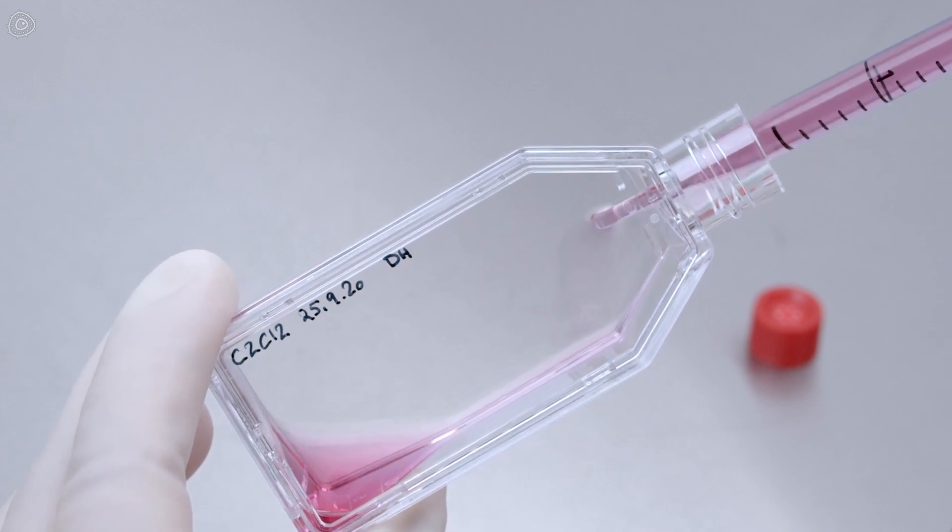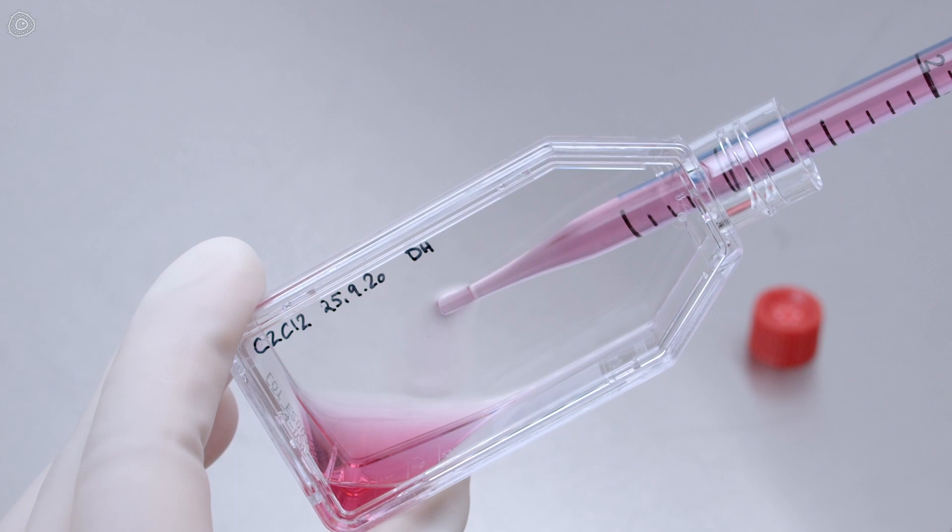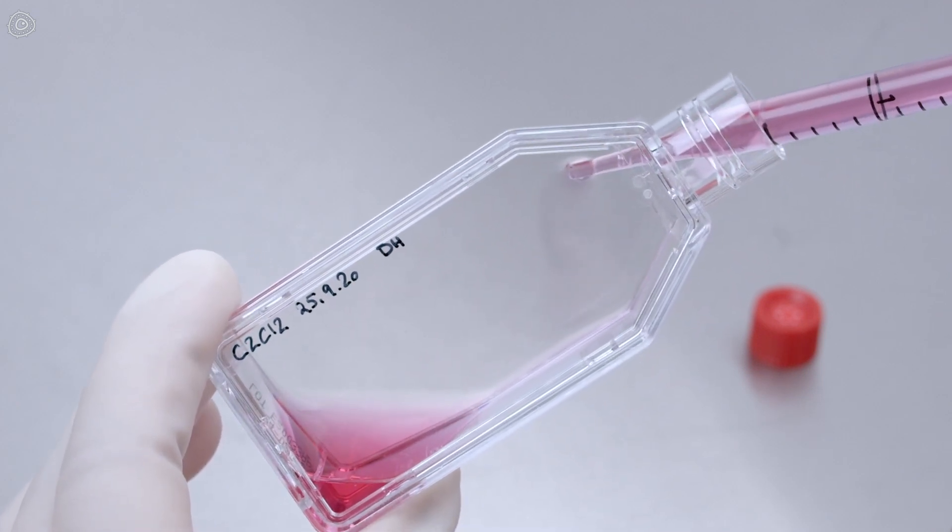So if you change things such as trypsin concentration, seeding cell concentrations, or the time you incubate your cells with trypsin or any other agents in the middle of your experiment, your experiment may not be reproducible.